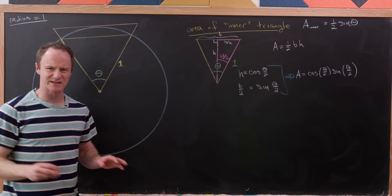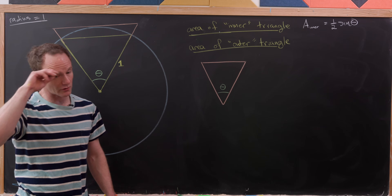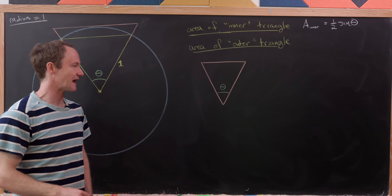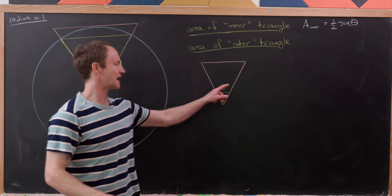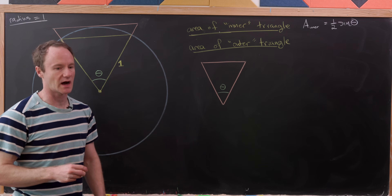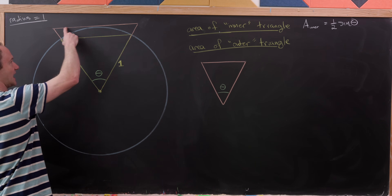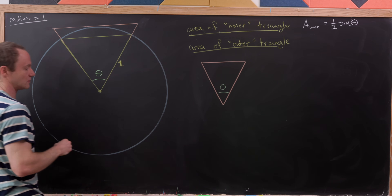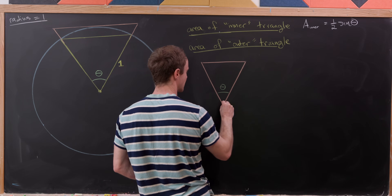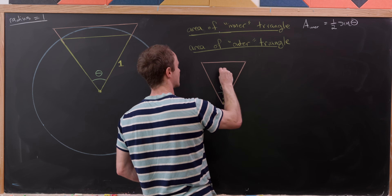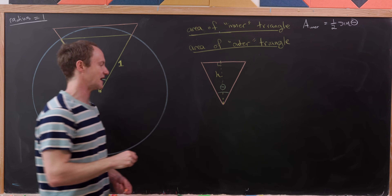Now let's do the same kind of game for the outer triangle. We've got our outer triangle on the board. Notice the two equal sides are not equal to 1. Since the top edge is tangent to the circle, the height H is equal to 1. We draw a dotted line up here that intersects at a right angle, giving us H.